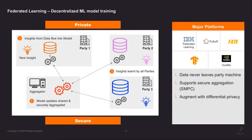However, there is research showing that model inversion attacks can extract individual data elements from the model updates — you can potentially find out what sort of data the model was trained on. To avoid this, there are techniques like differential privacy, which adds statistical noise to the model updates going to the aggregator. With differential private noise added, it becomes very difficult to get any individual data privacy elements of any individual user.